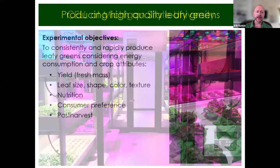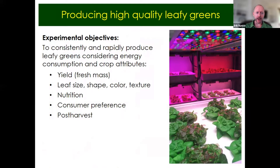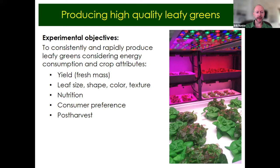The general objectives of our research with leafy greens is to consistently and rapidly produce them, considering energy consumption as well as different crop attributes. Of course, yield and particularly fresh mass is quite important. We also know that lighting parameters can influence leaf size, shape, color, and texture — some of the quality traits of plants — as well as nutritional content. There may be differences in how people respond to lettuces grown under different environments, how it influences taste and mouthfeel, as well as potentially the environment influencing the shelf life of the crop after harvest.